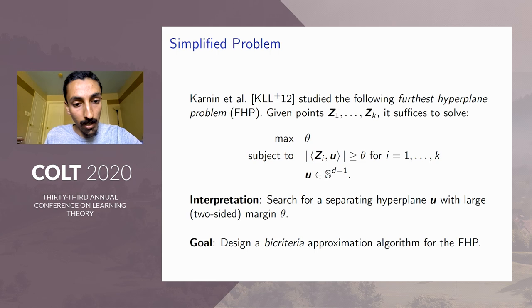And the second sense in which it's approximate is that we don't require it to produce a completely feasible solution. Rather, we only require that it produces a solution which satisfies a constant fraction of these k constraints.